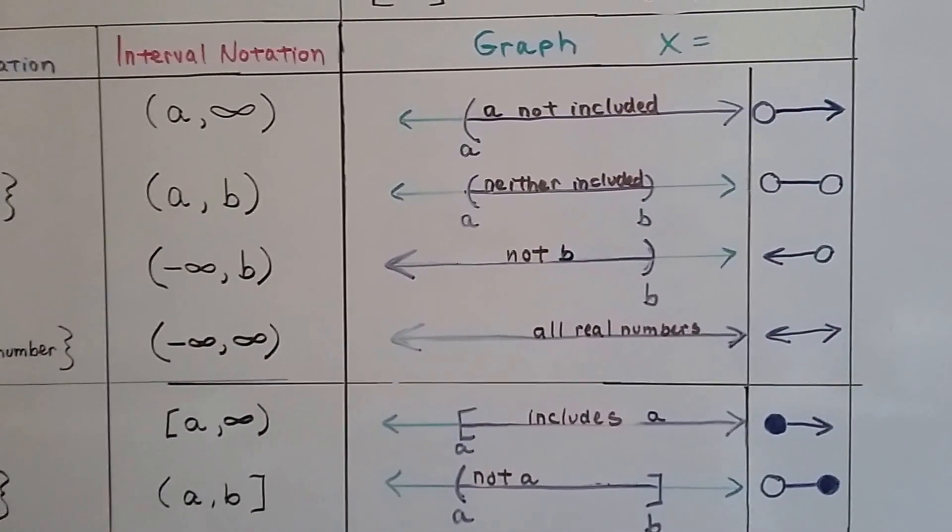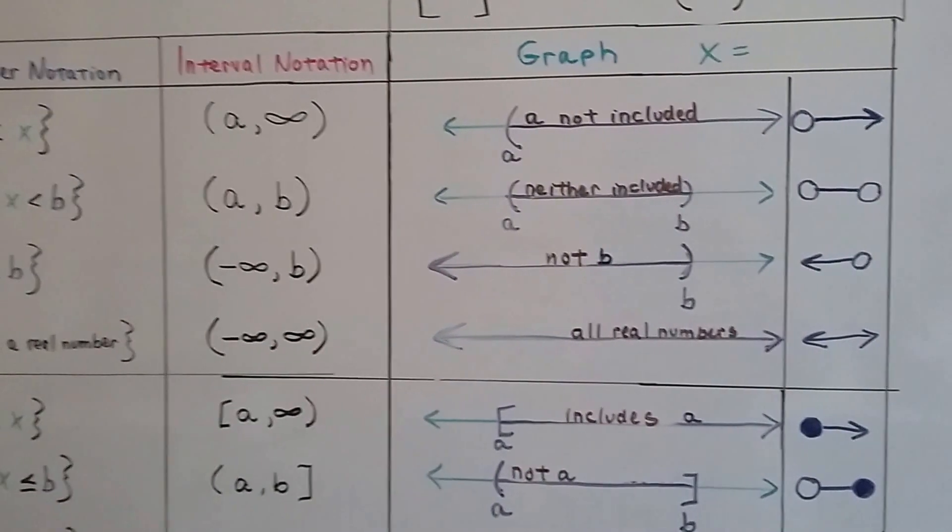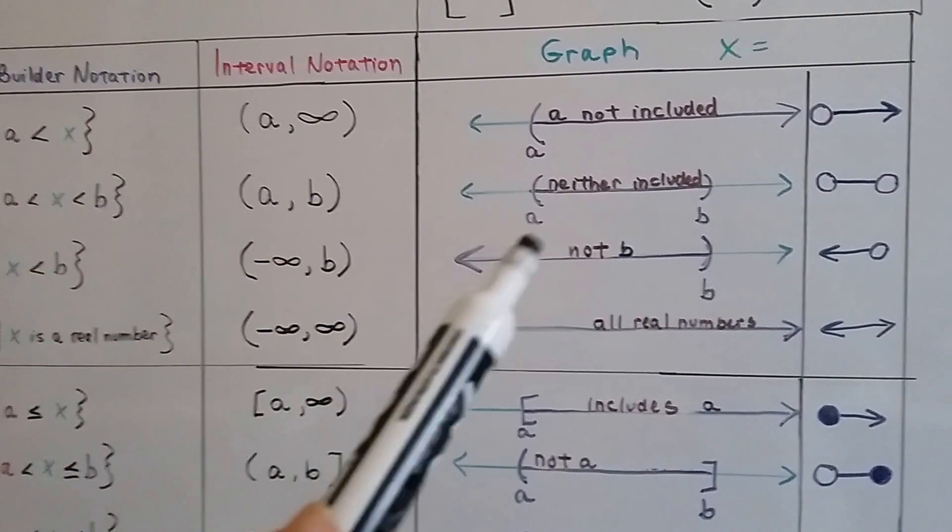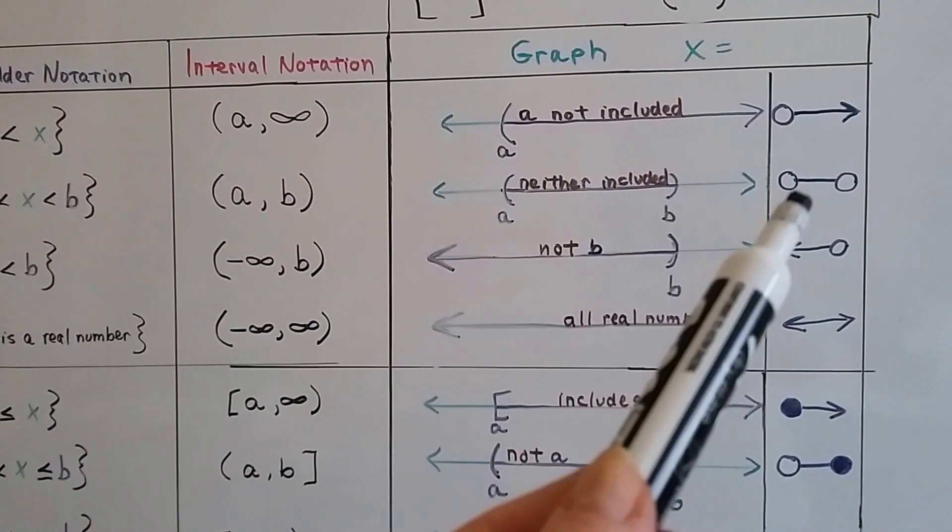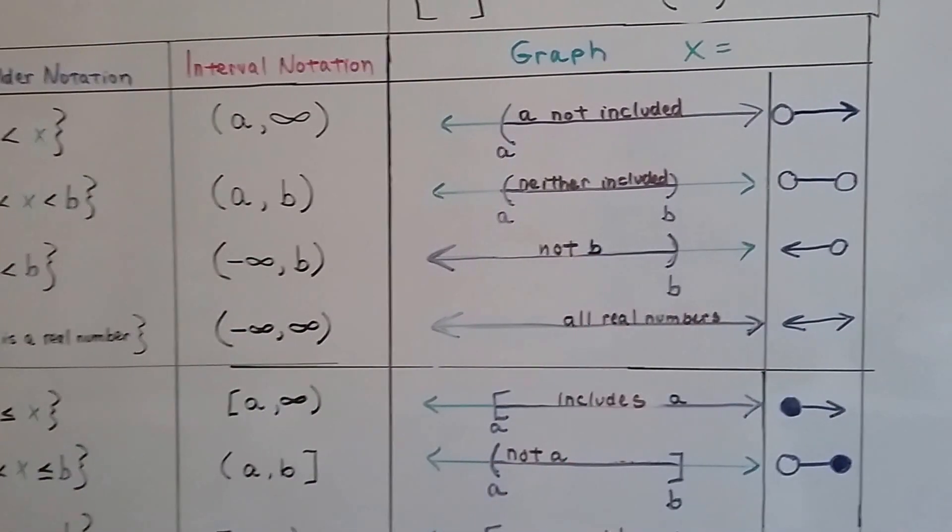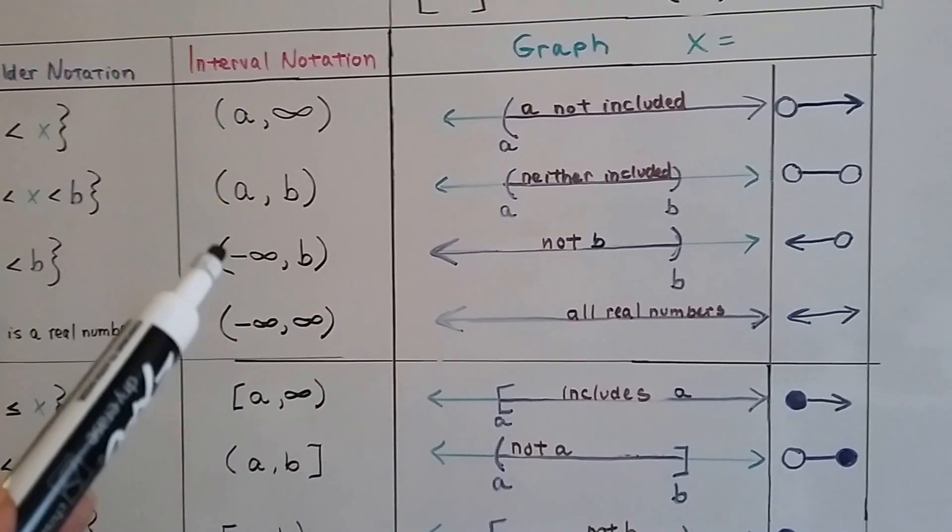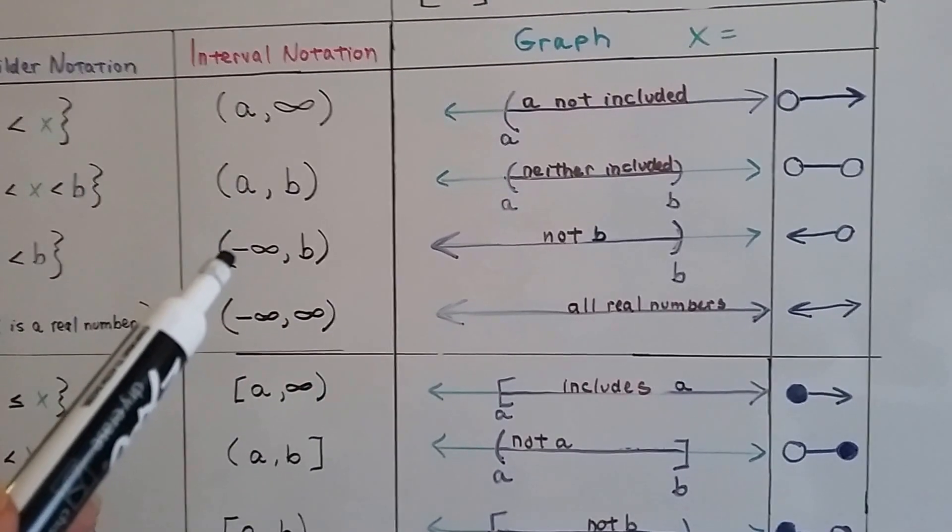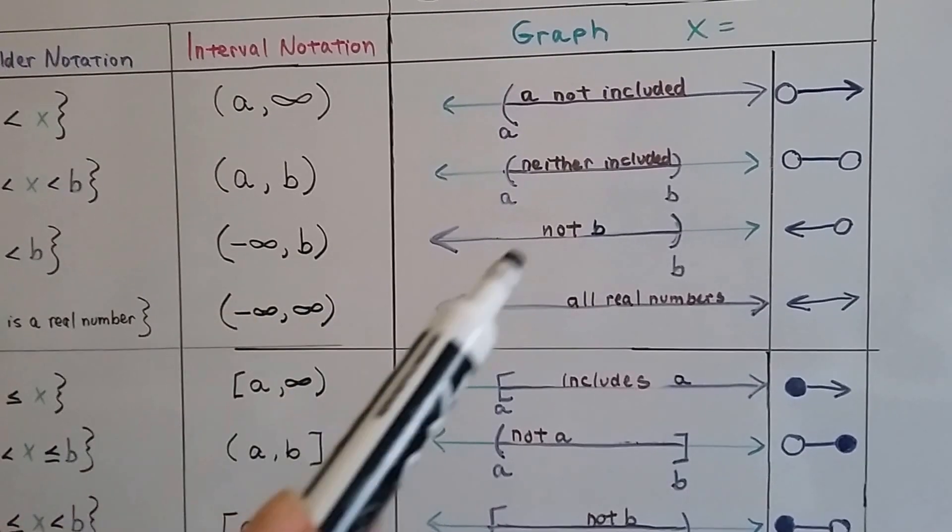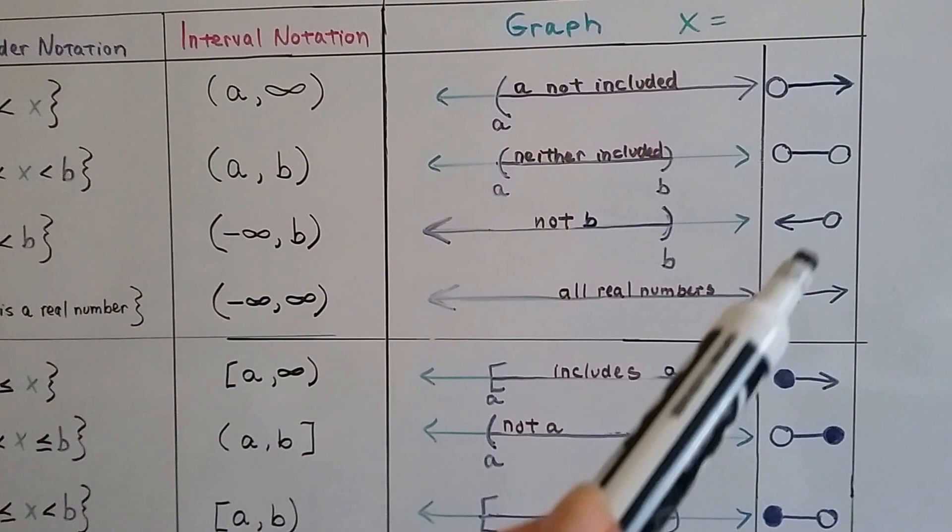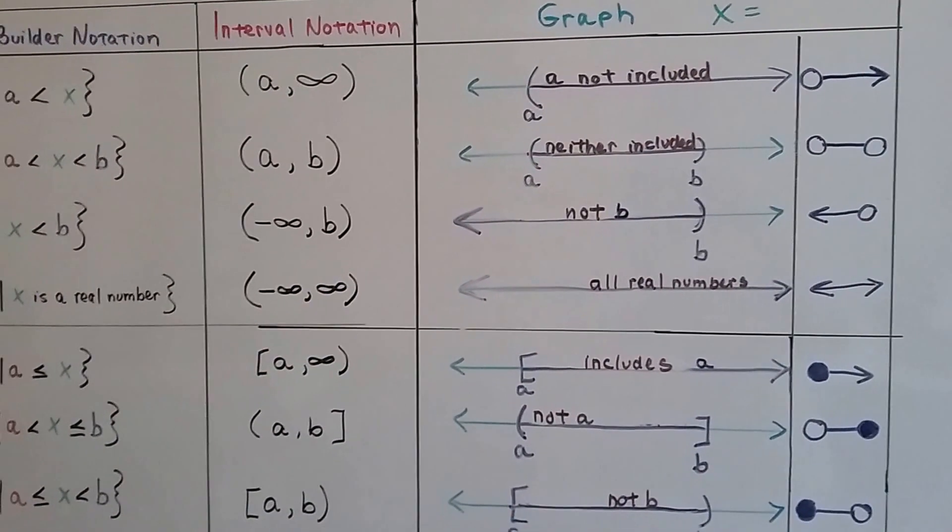We've got an open circle with an arrow going in the direction of infinity. And if it's got parentheses on each side, that means neither a nor b are included, and so they both have an open circle. We've got negative infinity and b, and we always put a parentheses next to infinity symbols. So b is not included, and it goes all the way forever into negatives. Or we can have an open circle going into the negatives.